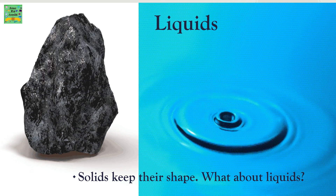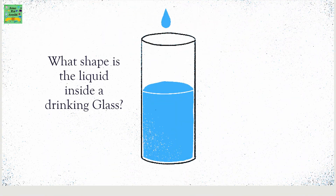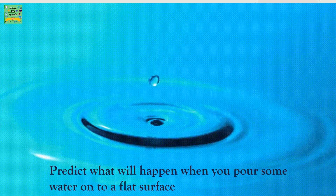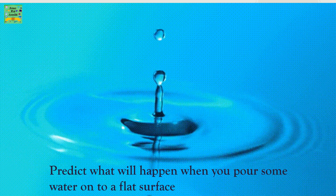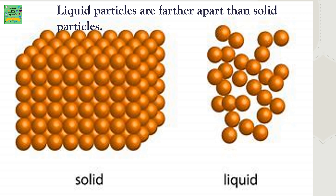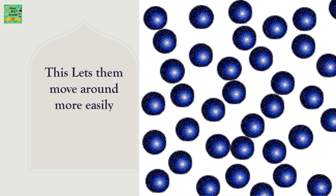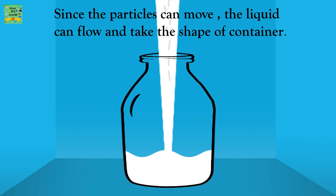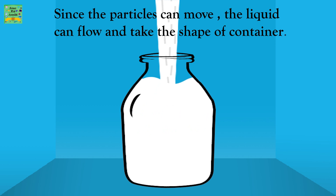Solids keep their shape — but what about liquids? What shape is the liquid inside a drinking glass? Predict what will happen when you pour some water onto a flat surface. Liquid particles are further apart than solid particles. The solid particles are closely packed while the liquid particles are freely or loosely packed. This lets them move around more easily. Since the particles can move, the liquid can flow and take the shape of its container.